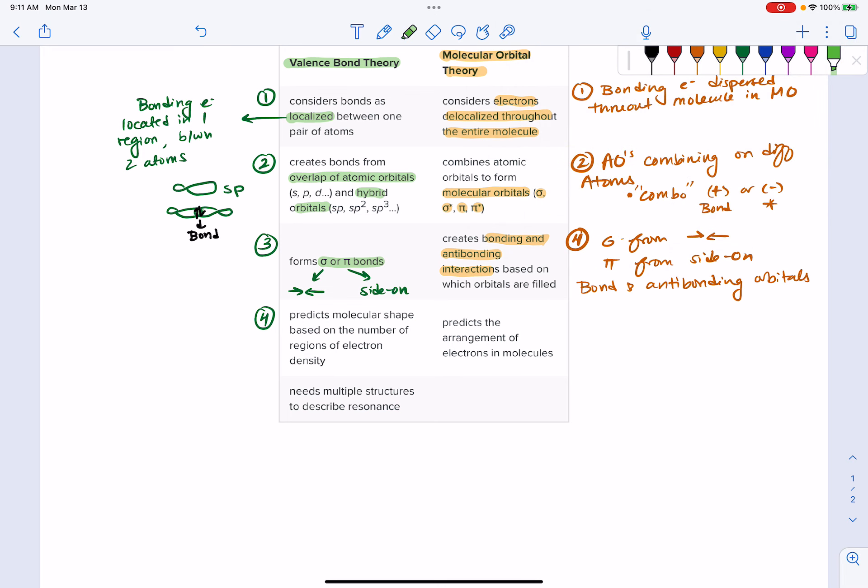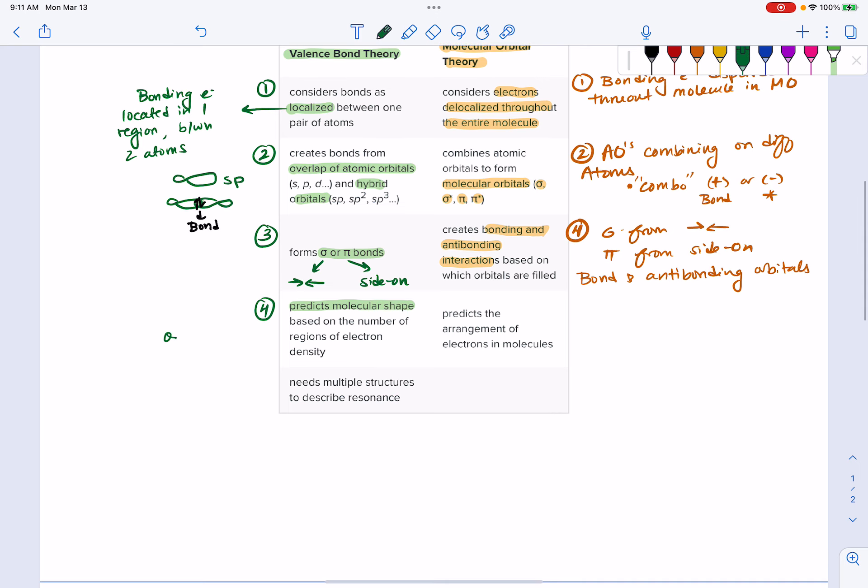And then valence bond theory relates to our VSEPR theory in that this allows us to predict the shape of our molecule based on the number of groups that are found on the central atom. This just means that orbital orientation is equal to our molecular geometry. So for example, any time we have sp2 hybridization, we know we're looking at a trigonal planar molecular geometry.